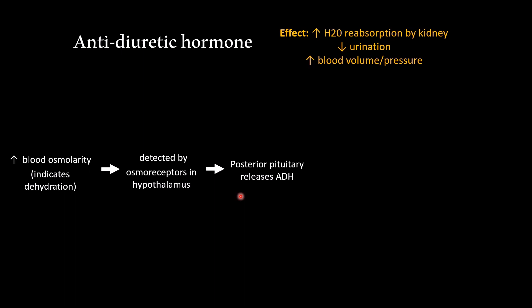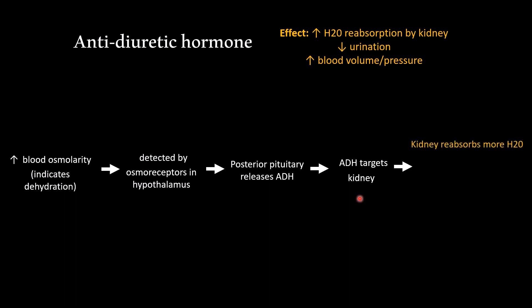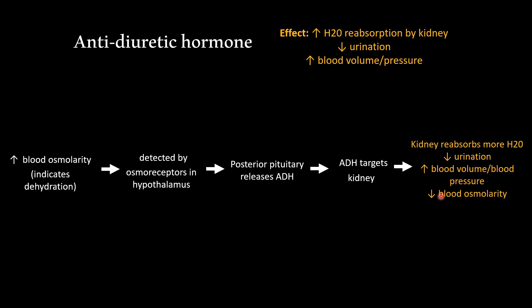The message about the problem flows throughout the bloodstream until it reaches the kidney. The ADH targets the kidney and causes it to reabsorb more water. That means you're going to urinate less, and over time increase your blood volume and blood pressure. In combination with drinking and time, that will help decrease your blood osmolarity back into the normal range.